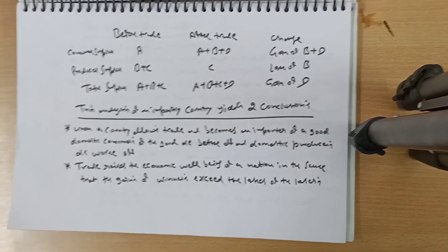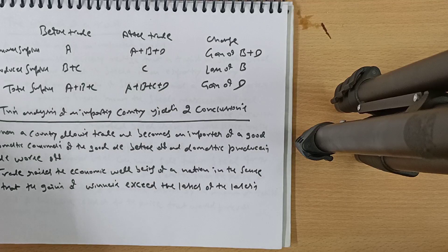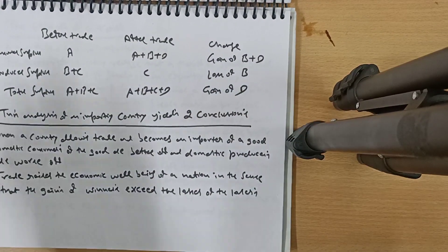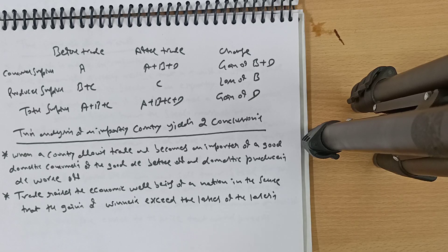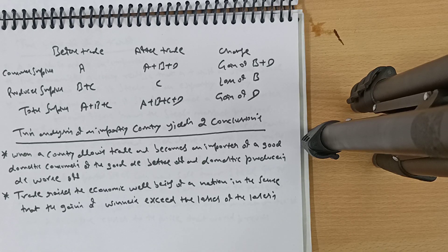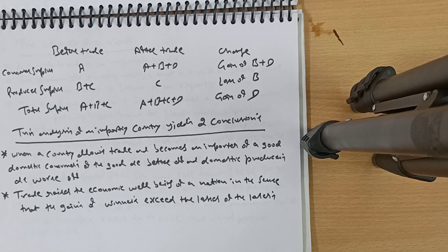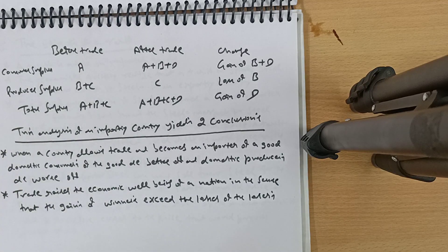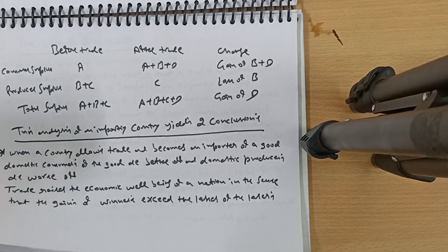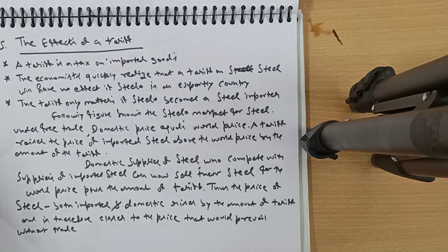In a table: before trade, consumer surplus was A; after trade it becomes A plus B plus D — gain of B plus D. Producer surplus was B plus C; after trade it becomes C — loss of B. Total surplus was A plus B plus C; it becomes A plus B plus C plus D — gain of D. When a country allows trade and becomes an importer, domestic consumers are better off, domestic producers are worse off, but trade raises the nation's overall economic well-being because the gains of winners exceed the losses of losers.